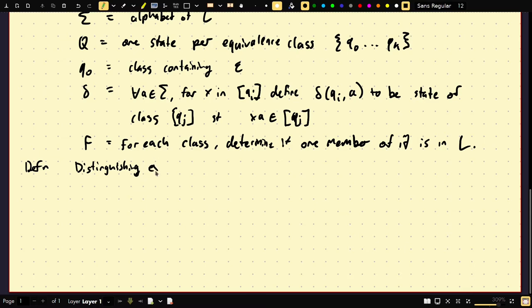Distinguishing extension. So, we say, let x, y both be in L or both not in L. We say z is a distinguishing extension if xz is in L and yz is not in L. So, basically, it breaks them up. So, one, you go into that bucket and then you go into the back, in that bucket. You guys aren't friends anymore, right? You guys have to split up.